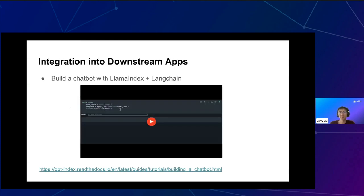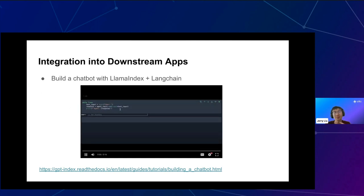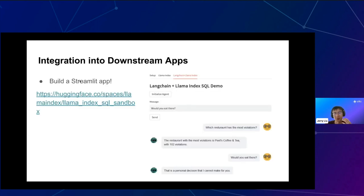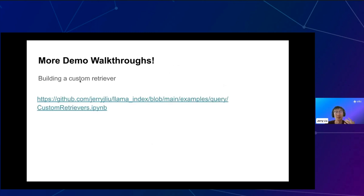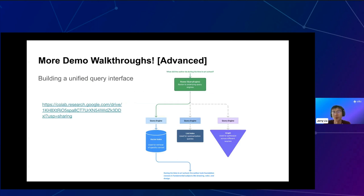That's basically it for the talk. There are other slides that show different types of tutorials — for instance, how to integrate with a downstream application, building a chatbot with LLAMA Index plus LangChain as the outer abstraction, tutorials on how to build a Streamlit app, demo walkthroughs especially with the new 0.6.0 release that allow you to customize retrieval query engines on top of your data, and router abstractions to help you build a unified query interface. Next up I'll be talking to Frank and answering some questions.